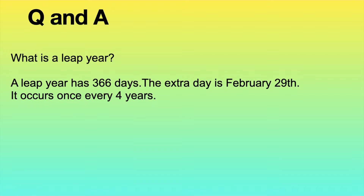What is a leap year? A leap year has 366 days. The extra day is February 29th. It occurs once every four years.